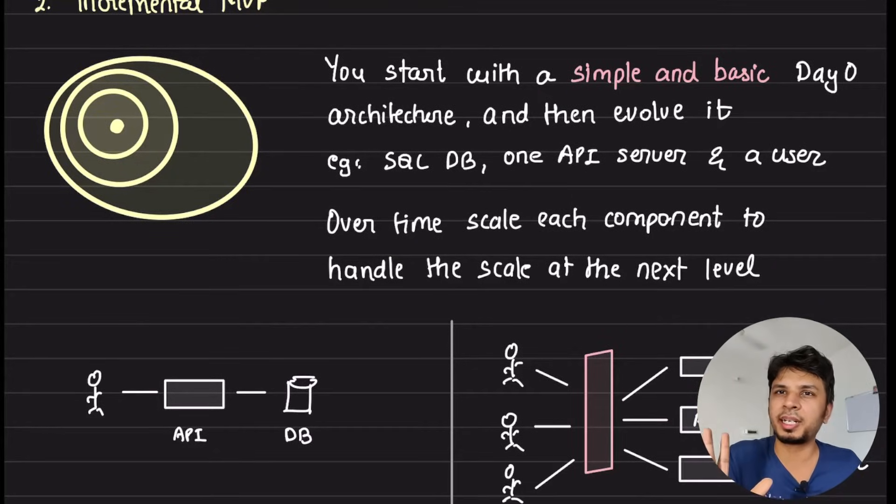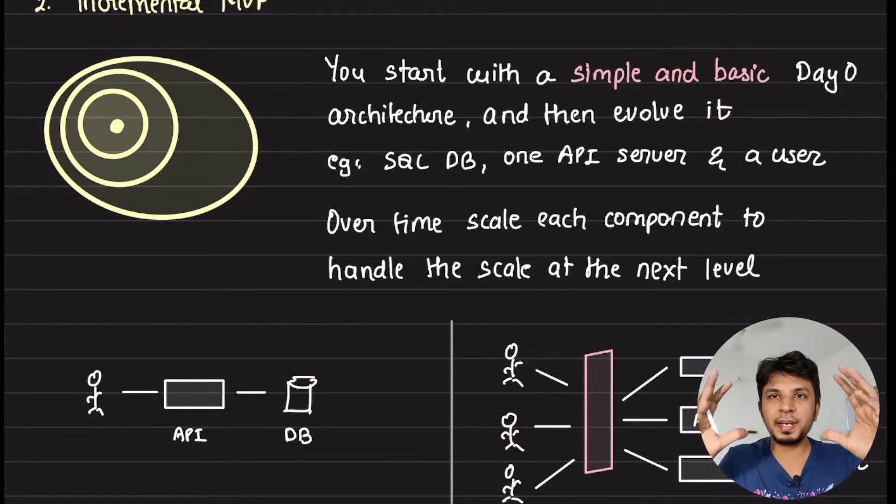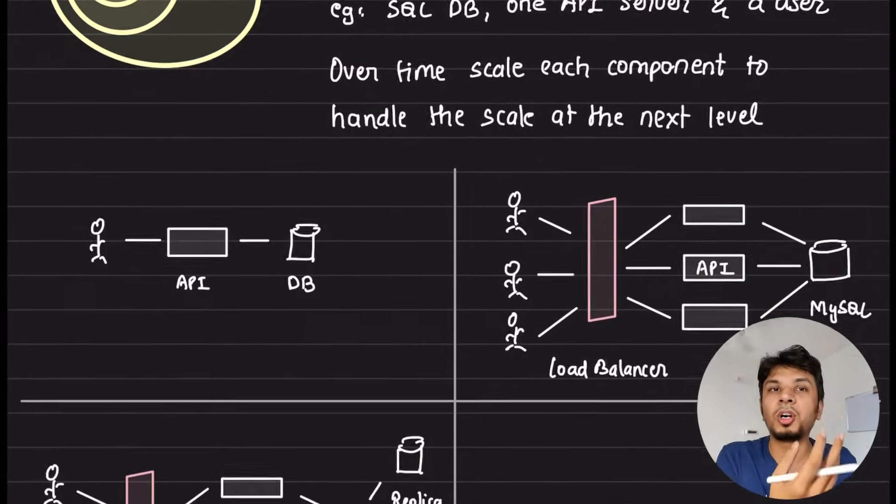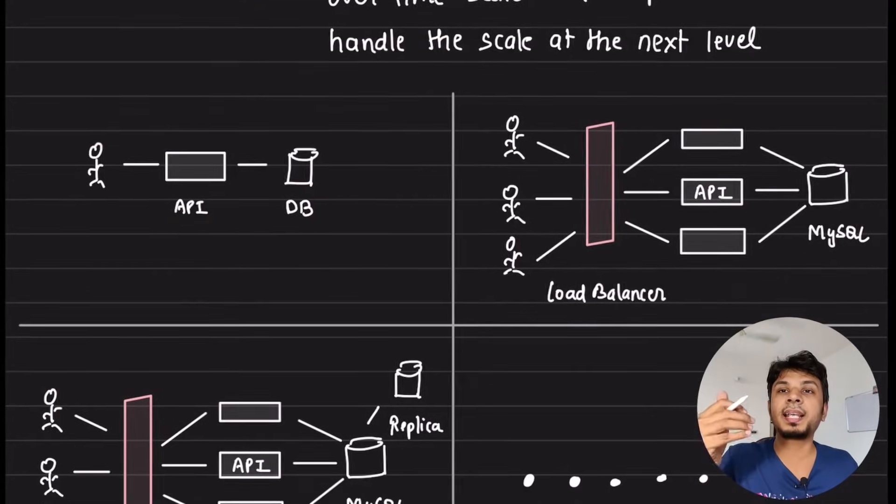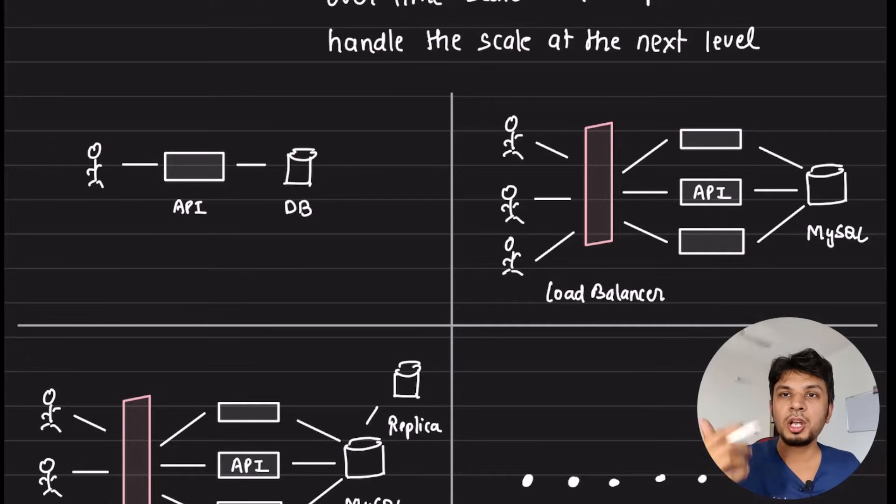Here the idea is you start with a very simple, extremely basic day zero architecture. Then you think, now this is my day zero architecture. Let's say I got more users, now what? For example, you started with a single user, a single API server and a single database.